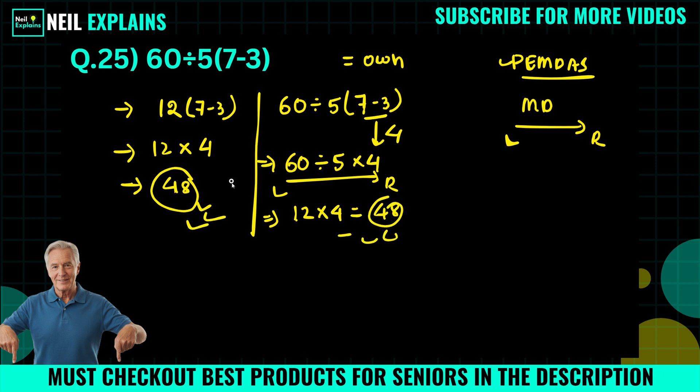So this answer is matched, but this is not the right way. Always do it in the order of operations way, or PEMDAS way, so you will never get a wrong answer. So here we can write 48 as our answer.